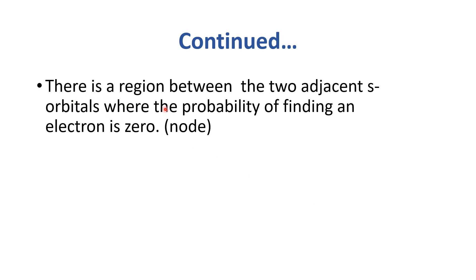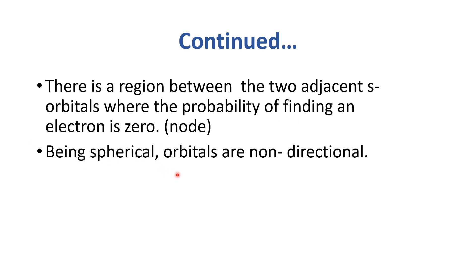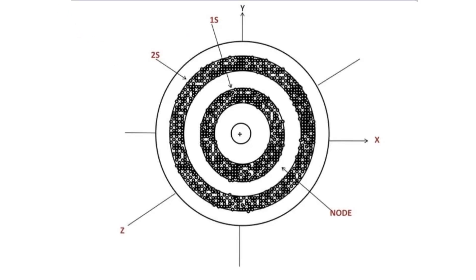Between two adjacent orbitals, there is a region where the probability of finding an electron is zero — that is called a node. Since s orbitals are spherical, they are non-directional. The two adjacent orbitals — 1s and 2s — have a region between them where the probability of finding an electron is zero. That area is known as a node. Here you can see: this is 1s and this is 2s. The gap between them is the node.